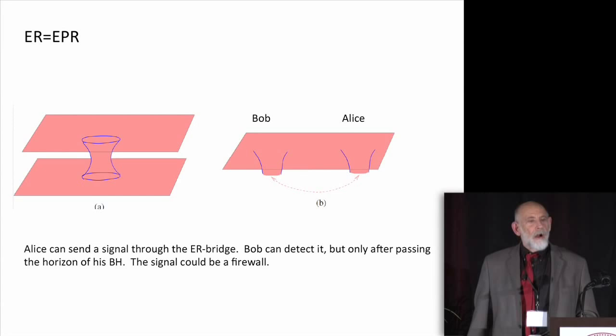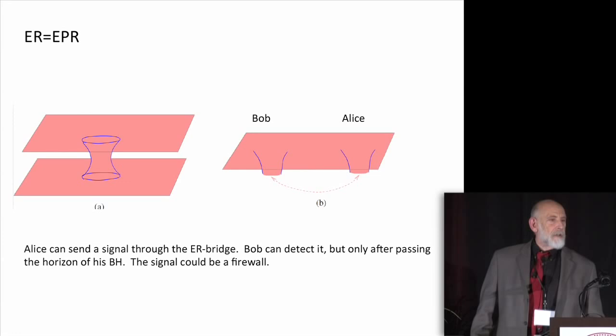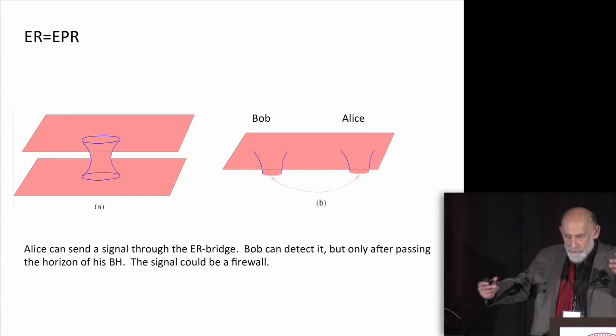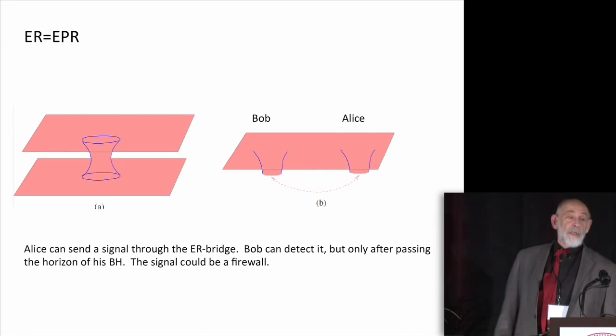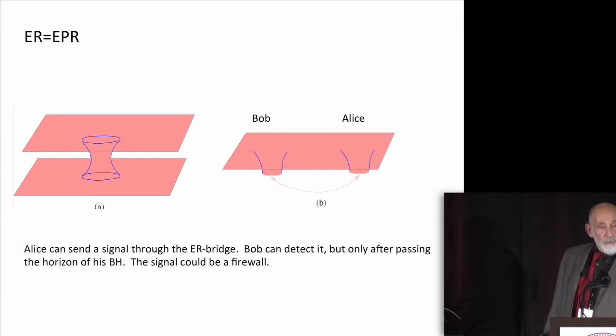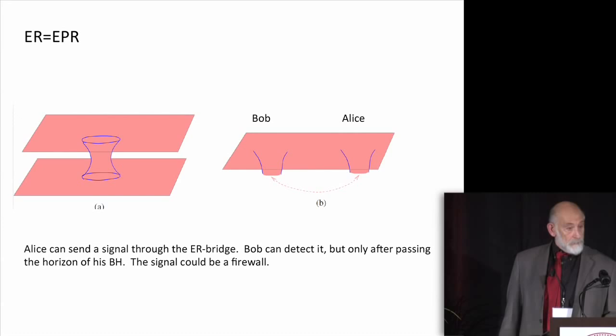But if those black holes are either caused to be entangled, you can't entangle them unless you either bring them together and let them interact, or bring entangled matter and separate it and drop it into those black holes. But if in some way those black holes are entangled, maximally entangled, entangled into the thermofield double state, then, according to the ER equals EPR principle, a new geometry grows. A new geometry, a wormhole, an Einstein-Rosen bridge, and the Einstein-Rosen bridge can be a robust geometry.